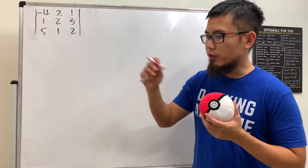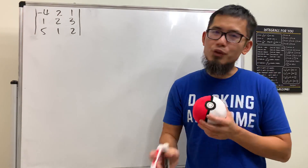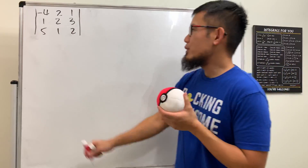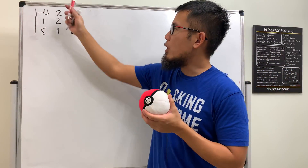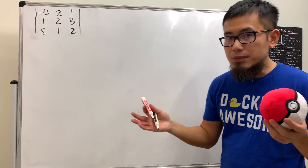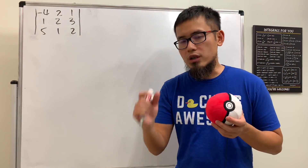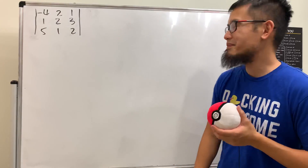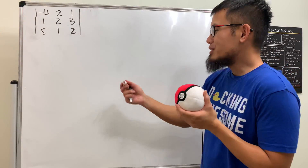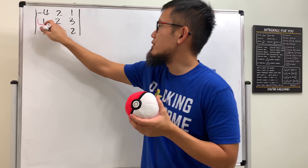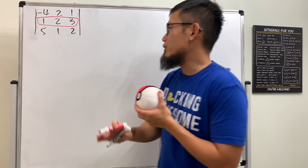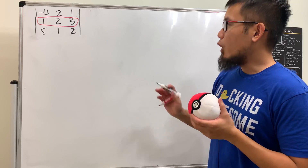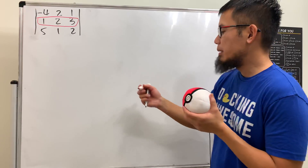The cofactor expansion works for three by three, four by four, five by five, or anything bigger — but hopefully we don't have to do any of that. What we're going to do is you can choose whichever row or whichever column. Ideally, you want to pick the row or column that has a lot of zeros, but we don't have any zeros here. I'm just going to focus on the second row.